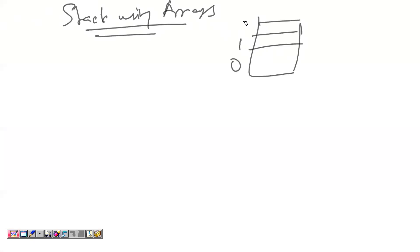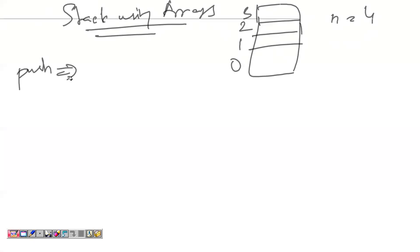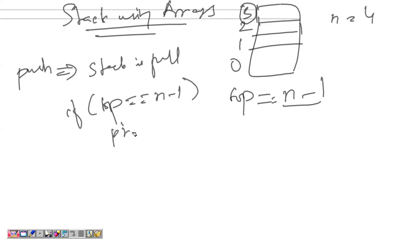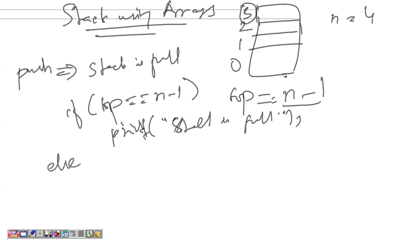Now if I want to perform push, the minimum requirement I need to check is whether the stack is full. How can I check if the stack is full? There is a variable called top. If top equals size minus 1, that is the end of the array, then I can say the stack is full. I will print a message saying stack is full.